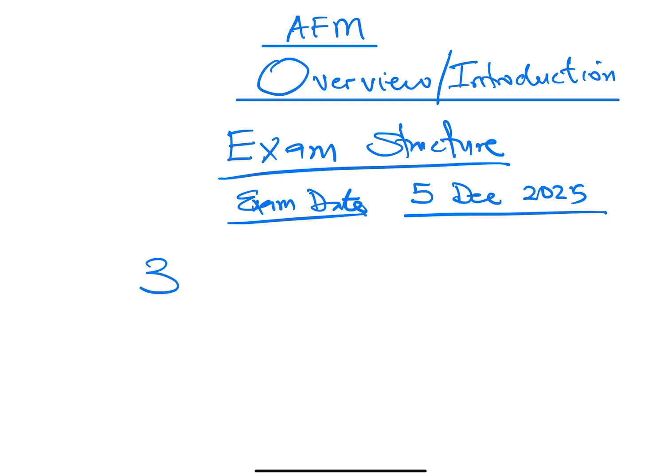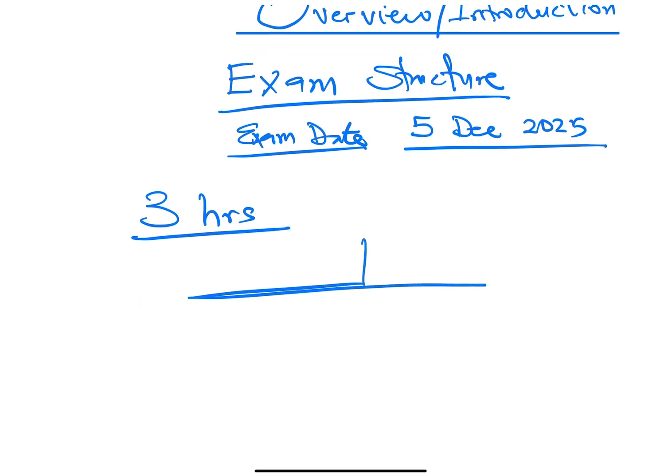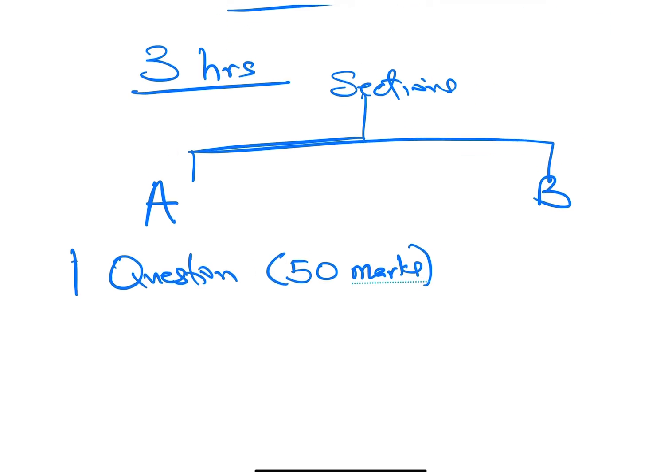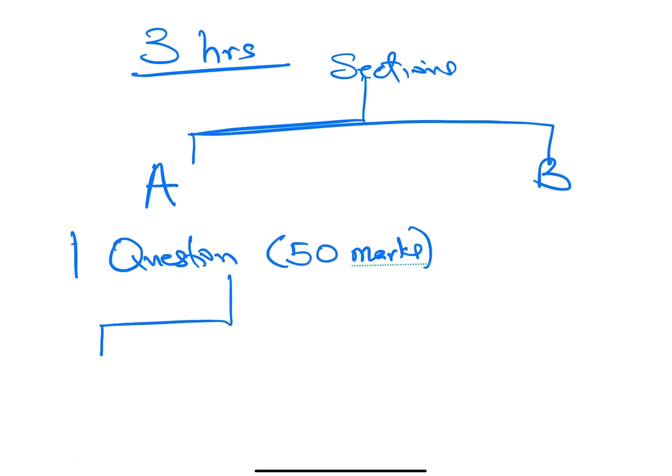The duration of the exam is usually going to be 3 hours paper. And this 3 hours paper will be tested in two sections. So you have Section A and Section B. Section A is just one question. However, this is an almighty question because it's actually going to be over 50 marks. And this 50 marks is actually divided into 40 that will be based on your technical knowledge.